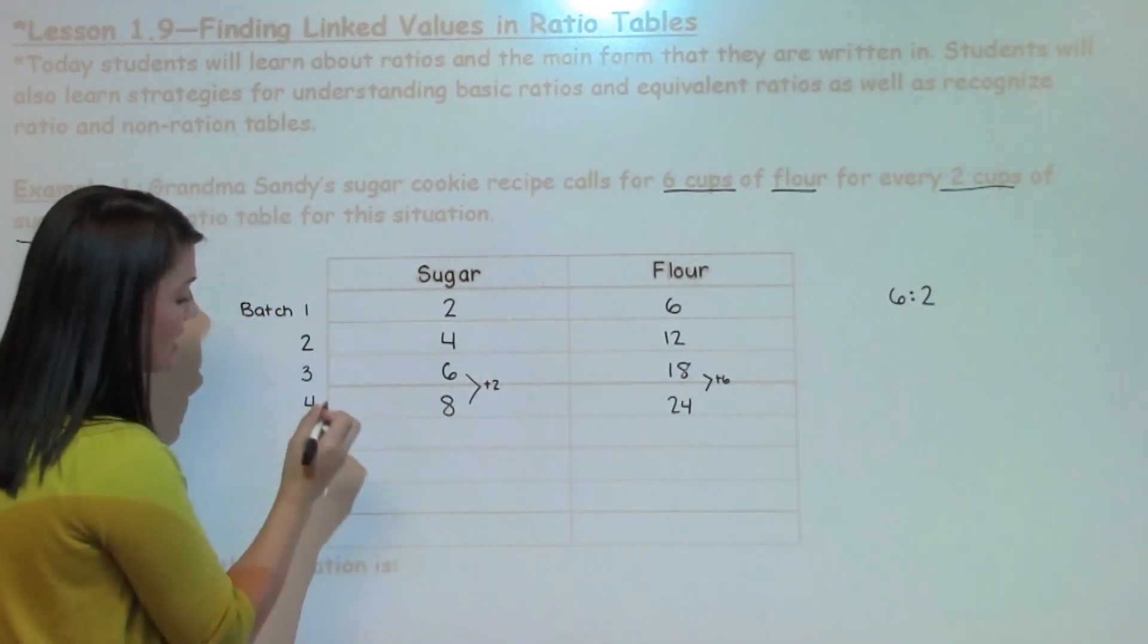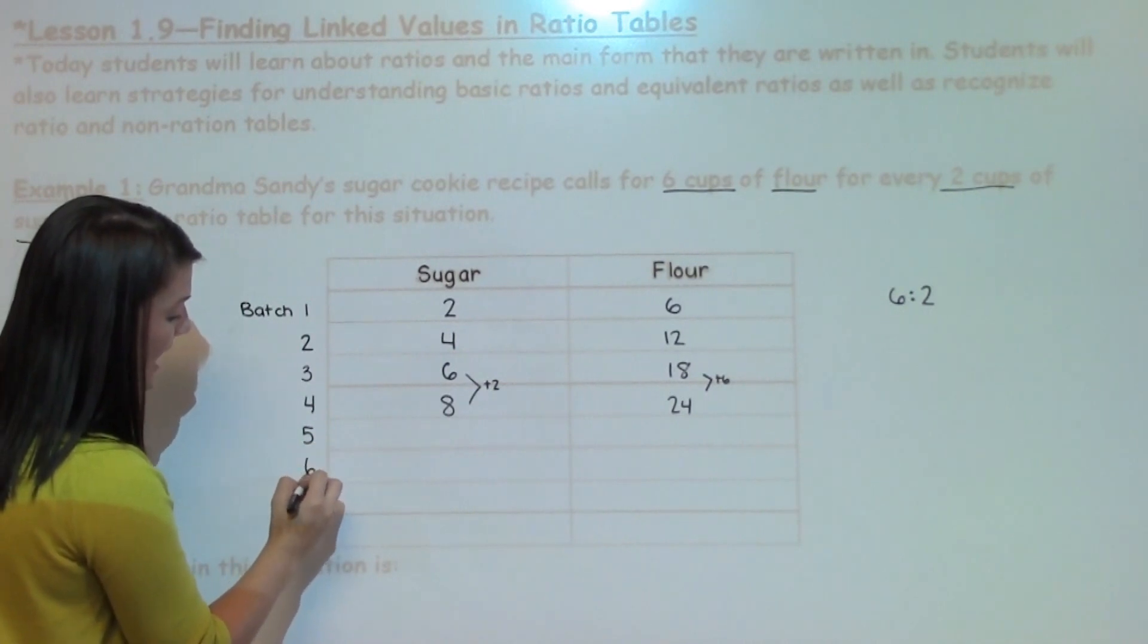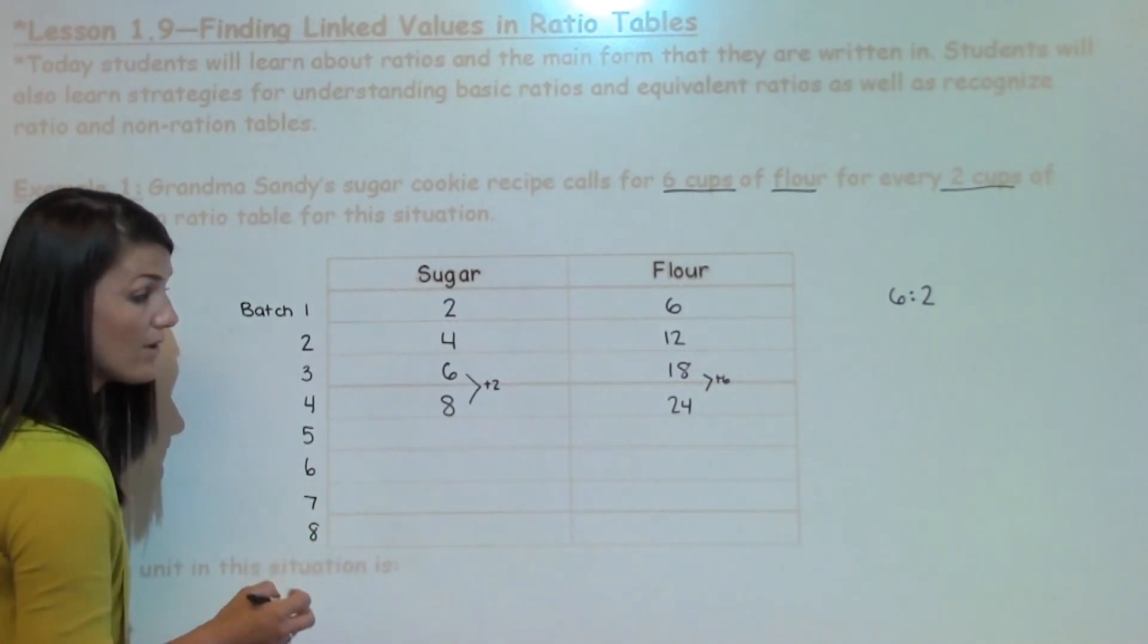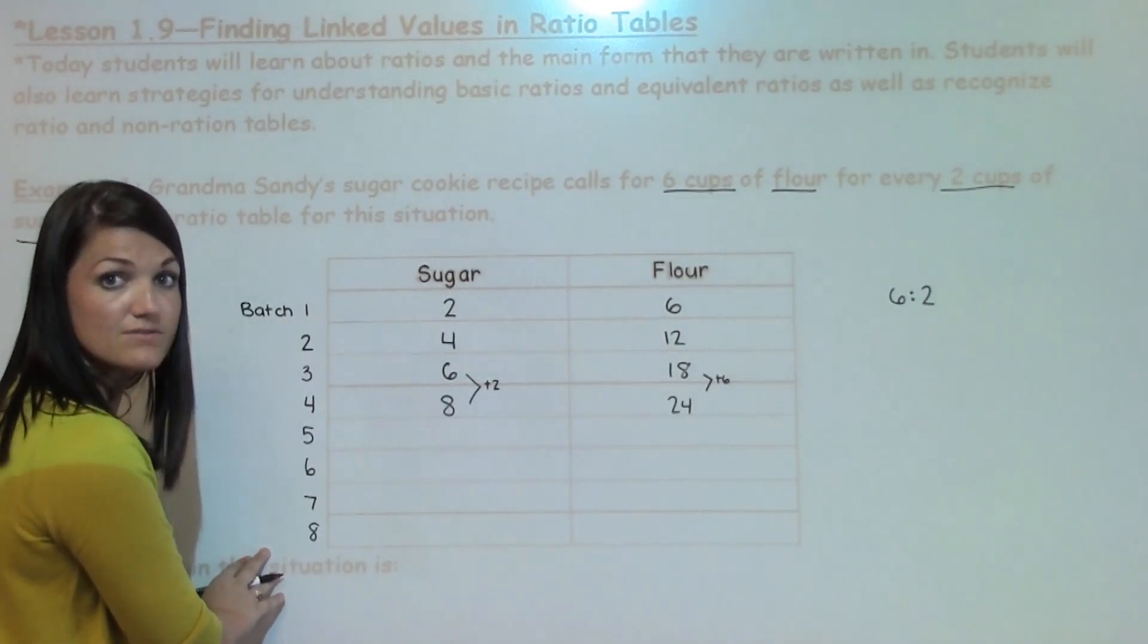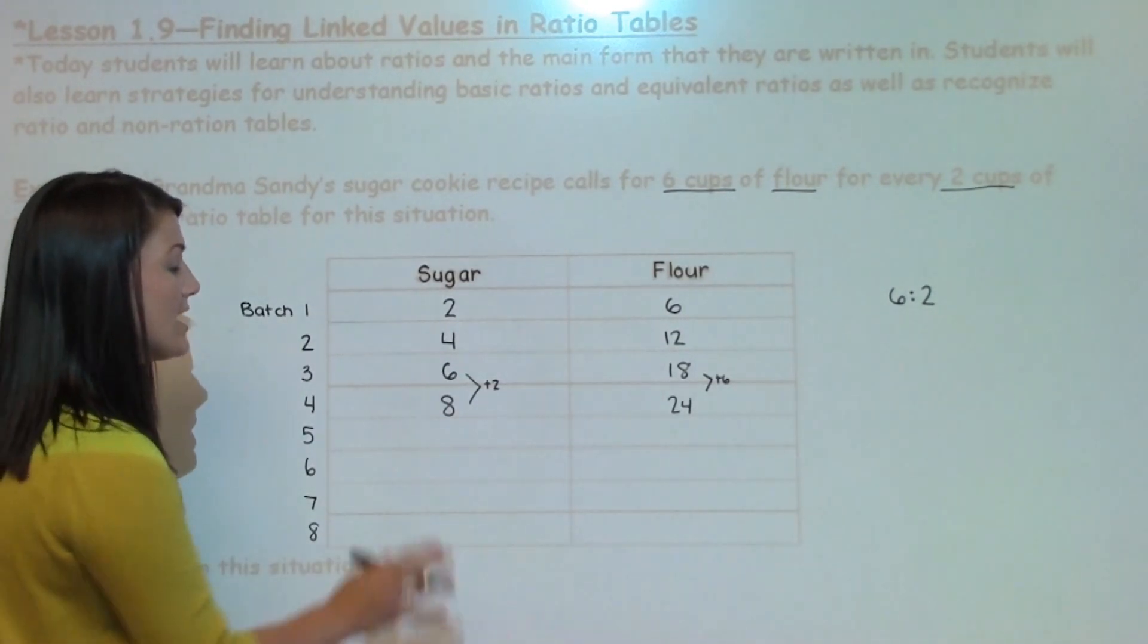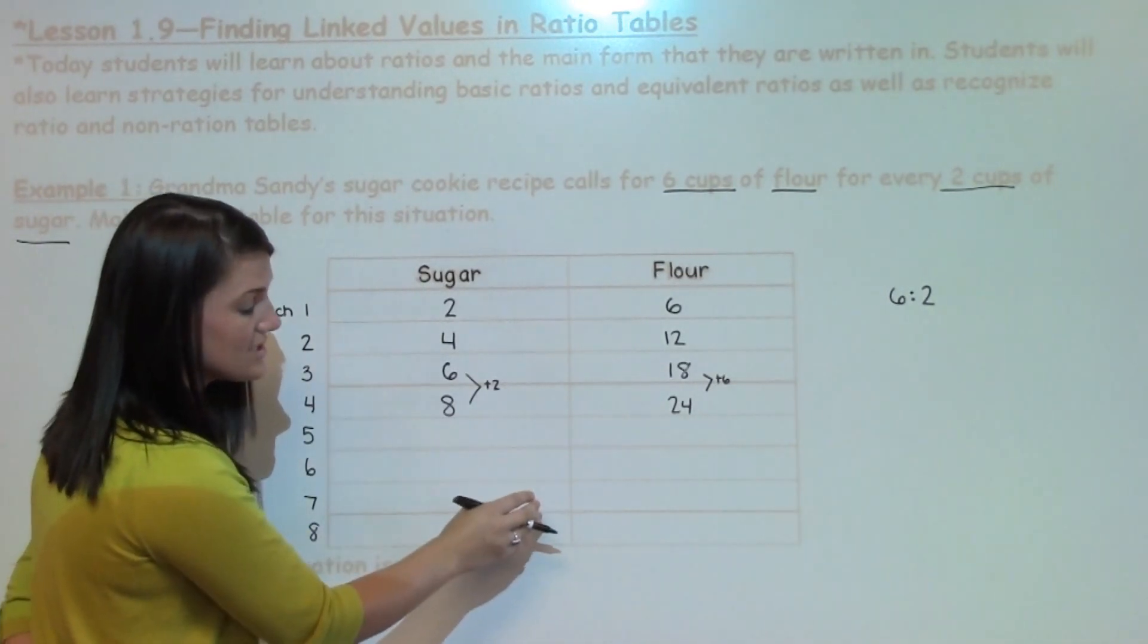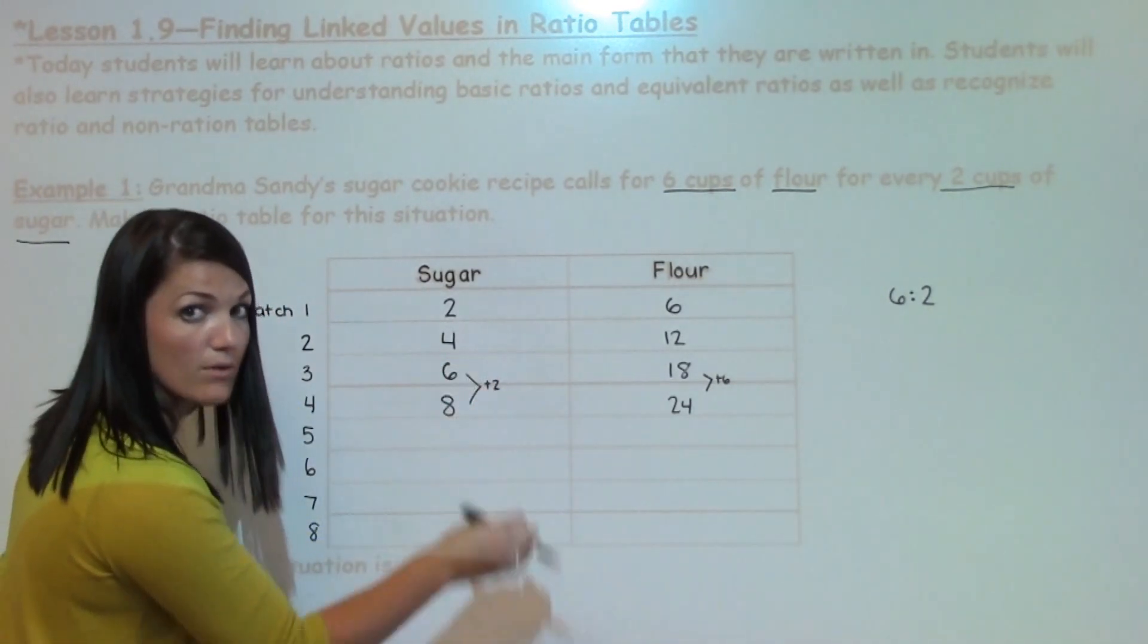I could continue to go down the table showing how much sugar and flour I would need if I wanted to make 5, 6, 7, 8 batches of sugar cookies and so on, by looking at the connections that each one has moving down the ratio table.